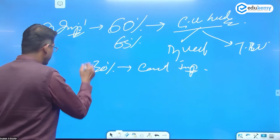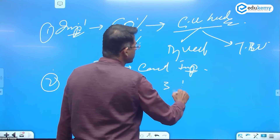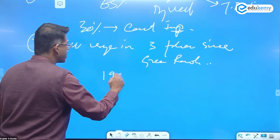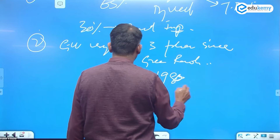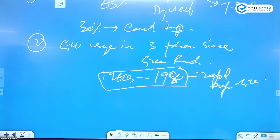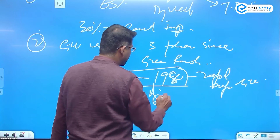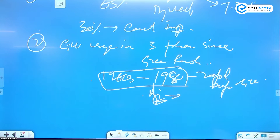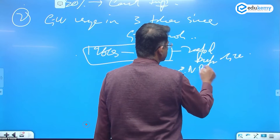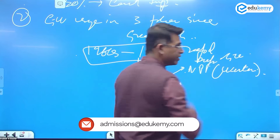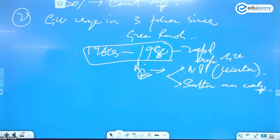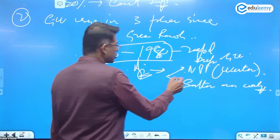Groundwater usage since the Green Revolution can be divided into three phases. The first phase, from the 1960s to the 1980s, was a rapid expansion of groundwater extraction, primarily for agricultural purposes. This expansion was concentrated mainly in the northern plains and western regions, but also scattered across the country — in coastal areas, black cotton regions, and river basins — with agriculture being the dominant driver.